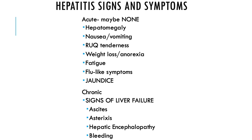Once hepatitis becomes chronic, we look more at signs of liver failure in general — things like ascites, diabetes, asterixis, hepatic encephalopathy, and bleeding. All the signs that the liver itself is failing, because remember all those 500 functions start to go downhill.